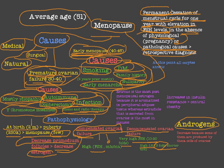Regarding androgens in menopause: they decrease because some androgens are produced in the ovaries — specifically by the thecal cells — and ovarian failure occurs in menopause. However, we do not have zero androgens, because the adrenal gland still secretes androgens such as androstenedione and androsterone.